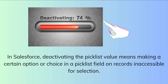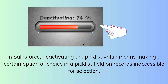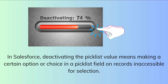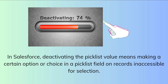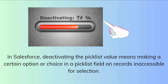Deactivating a picklist value is beneficial in multiple situations, such as when you no longer need it, it is no longer applicable to your business processes, it has become outdated, or to prevent misunderstanding or improper data entry. It can also be useful when you wish to simplify the picklist field selection and restrict the choices to those already expected and widely used. Moreover, deactivating a picklist value doesn't actually delete or remove it from the system — the value is still in the field configuration and is available for future use if necessary.